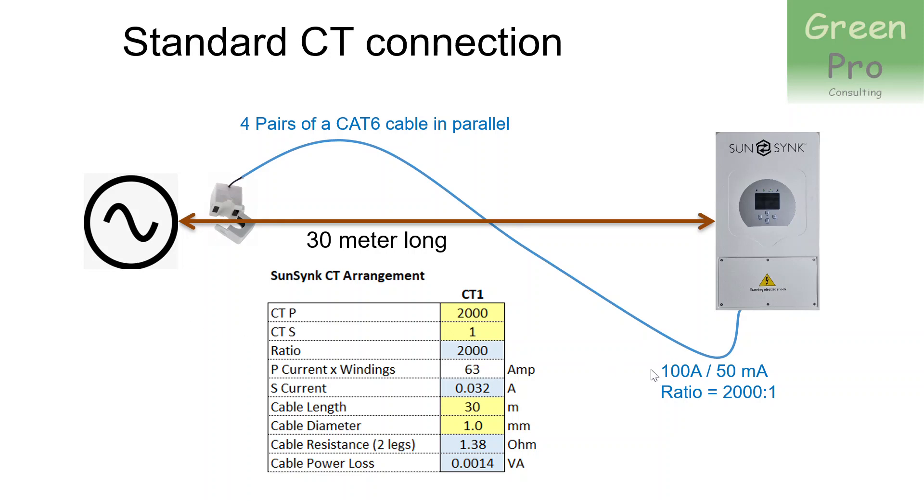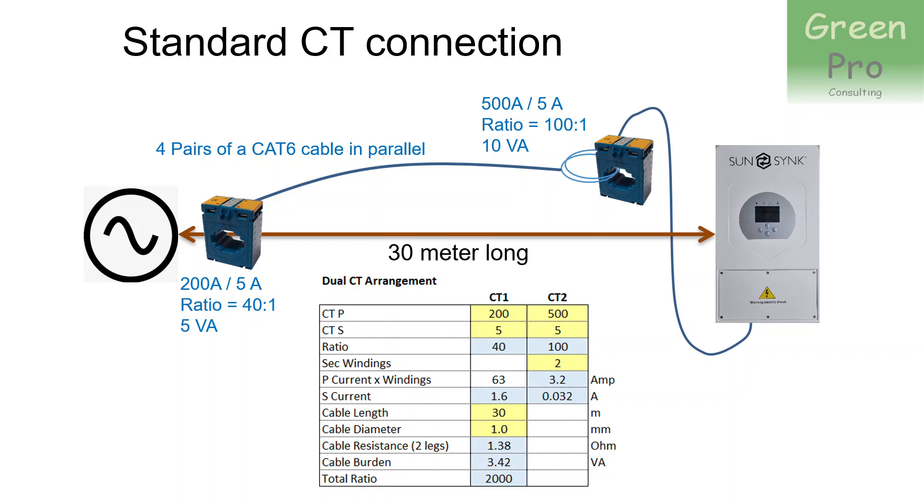So I then said to myself, how do I increase the current in this cable but maintain that 50 milliamp, or in this case 32 milliamp at 63 amp going into the inverter, using current transformers? And the idea that I came up with was to use two current transformers. There's no reason why you can't take a current transformer, take the secondary current of the current transformer, wind it through another current transformer, and then use the output of the second current transformer. There's no reason why you can't put transformers in series.